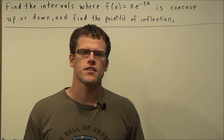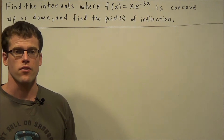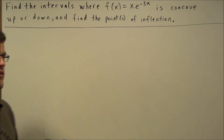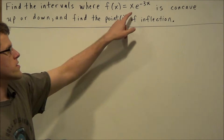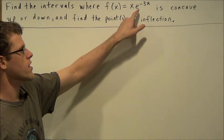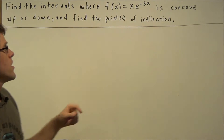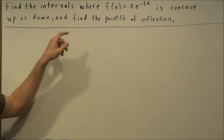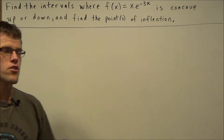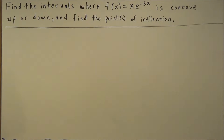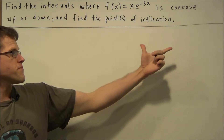Hi, my name is Vincent and today I want to take a look at how to find points of inflection. We have: find the intervals where f of x equals x times e to the negative 3x is concave up or down, and find the points of inflection. For this example, we need to make use of the following theorems.